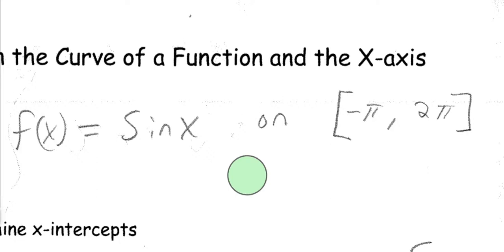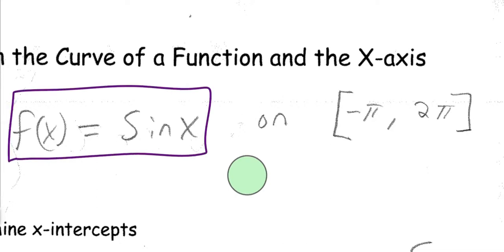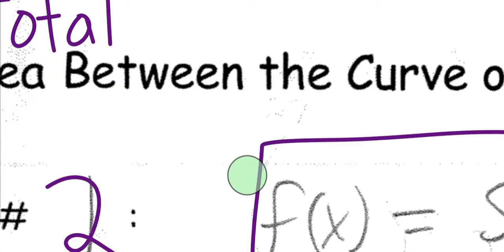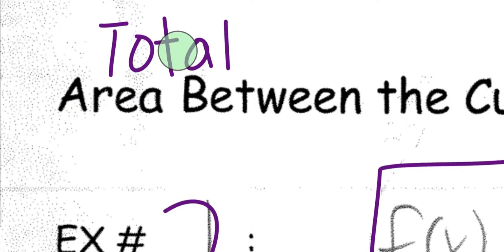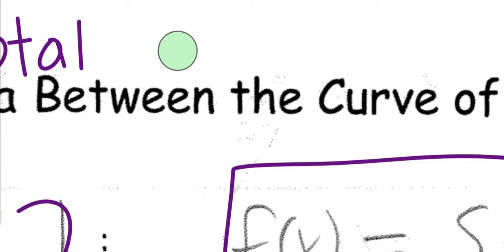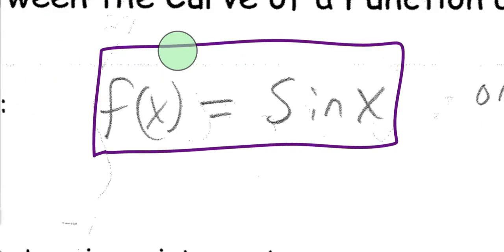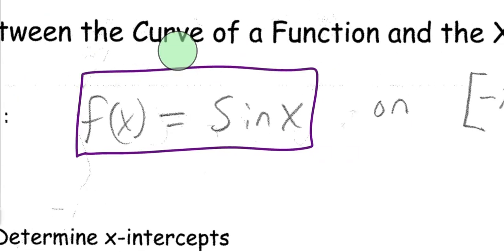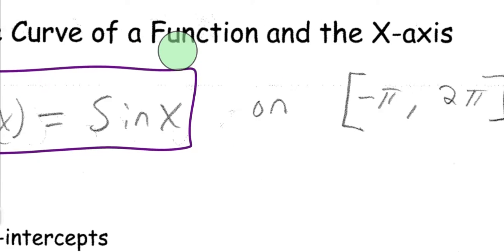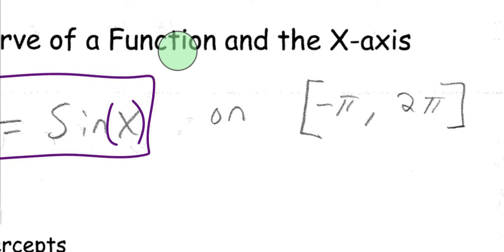We're going to take a look at another example of finding the total area between a function and the x-axis. The key word here, again, is total — so every area that we find has to be positive, unlike the definite integral, which can have a negative area. We want to figure out the total area between f(x) = sin(x) and the x-axis on the interval negative pi to 2 pi.